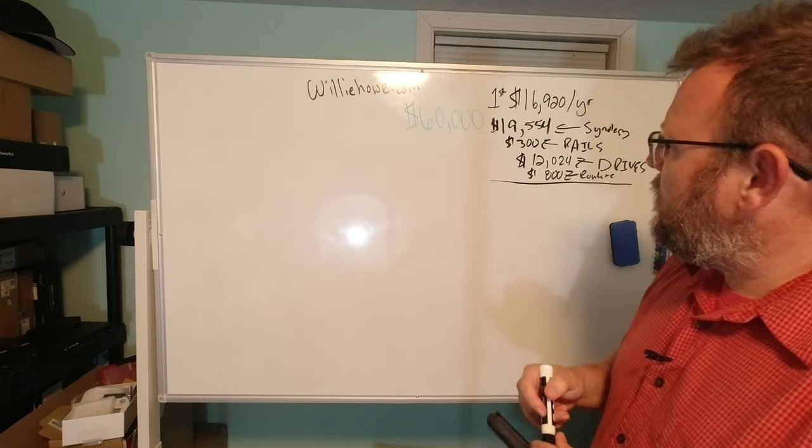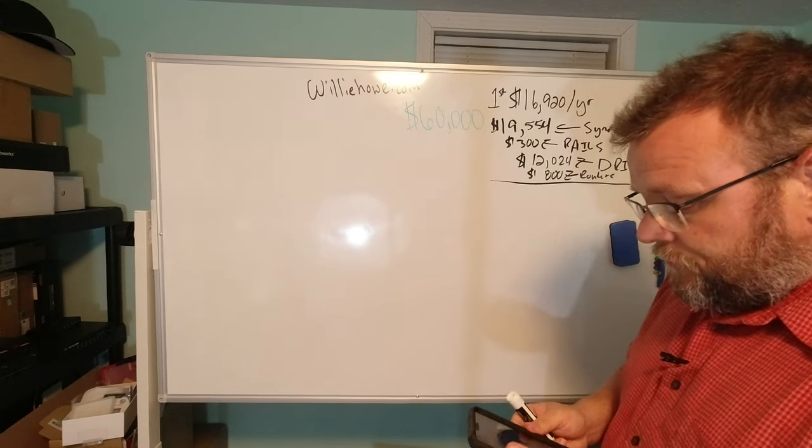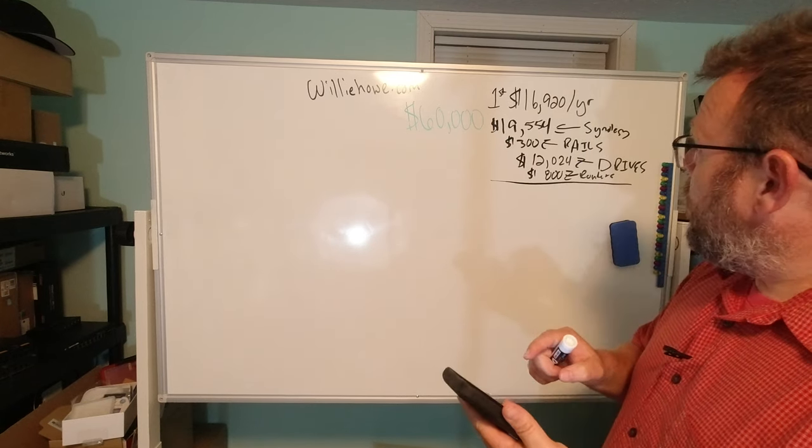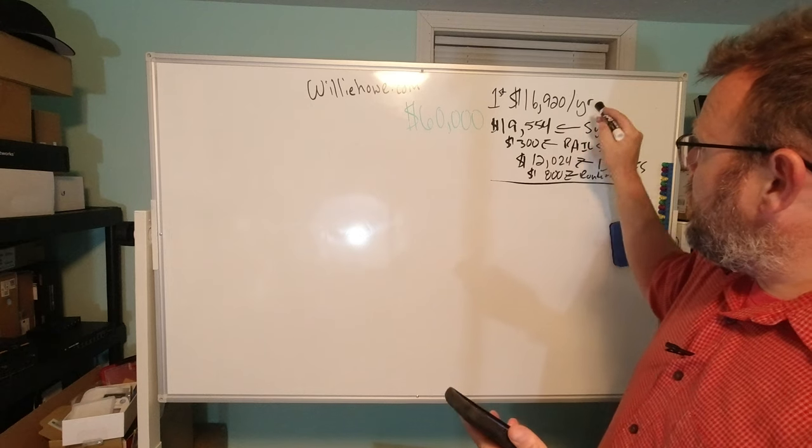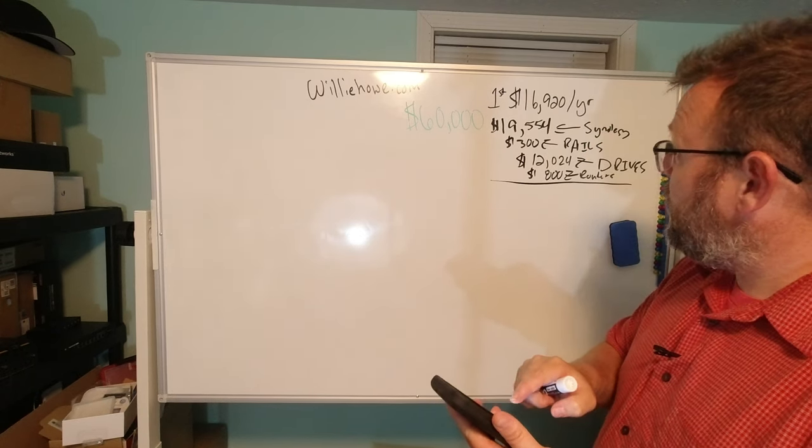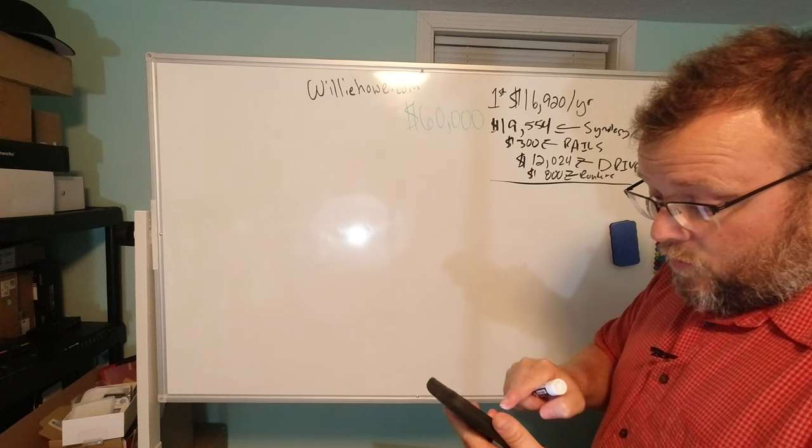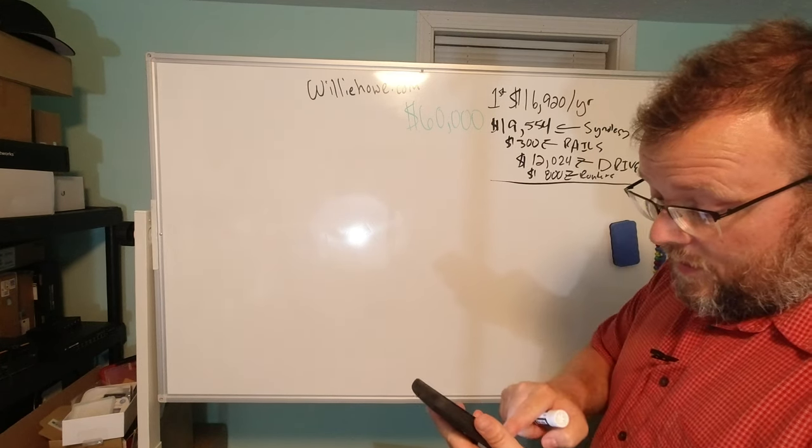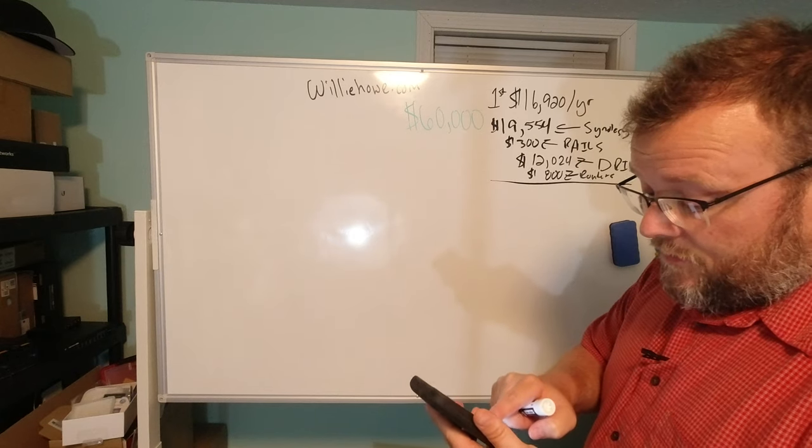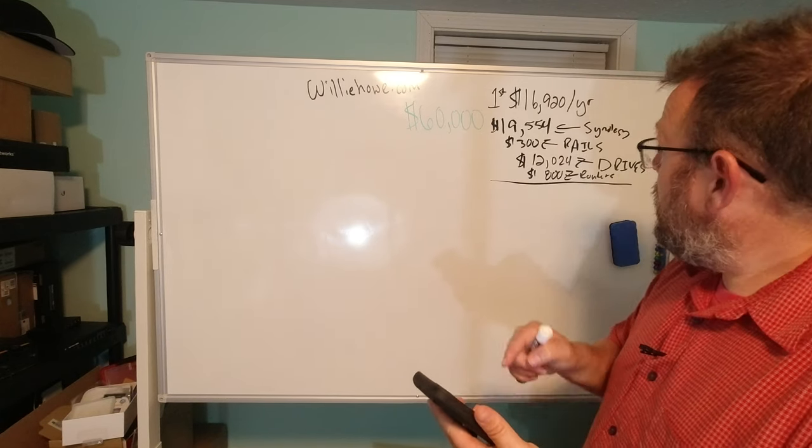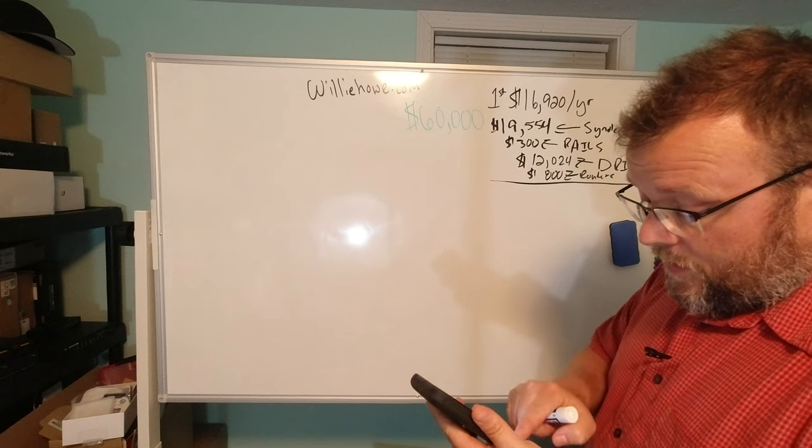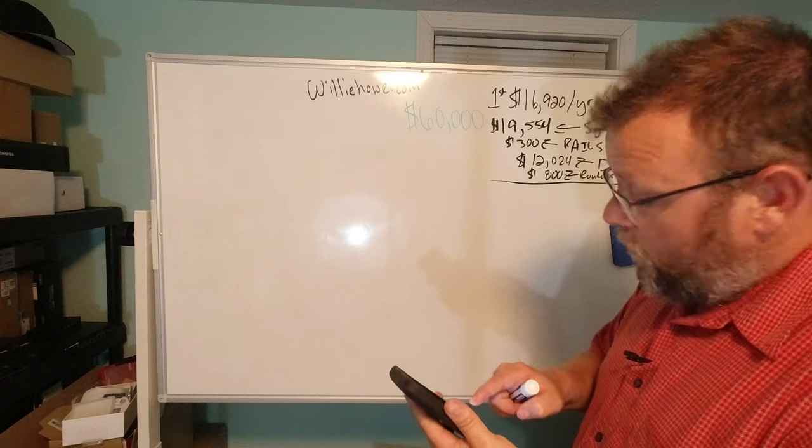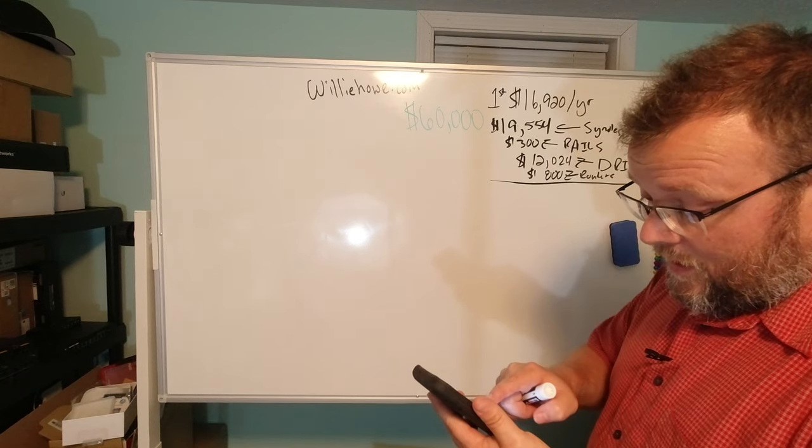So I'm going to add all these numbers up here. So we're going to do first year with our colo service at $16,920, we are going to do the Synologies at $19,554, we're going to do the rails at $300, we're going to do the drives at $12,024, and we're going to do routers at $800.